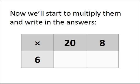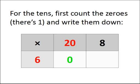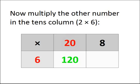Now we'll start to multiply them and write in the answers. For the tens, first count the zeros. As you can see, there's one zero in the number 20, and write them down. Now multiply the other number in the tens column, that's a 2, times the 6, gives you 12. Put that next to the zero, and you've got 120.